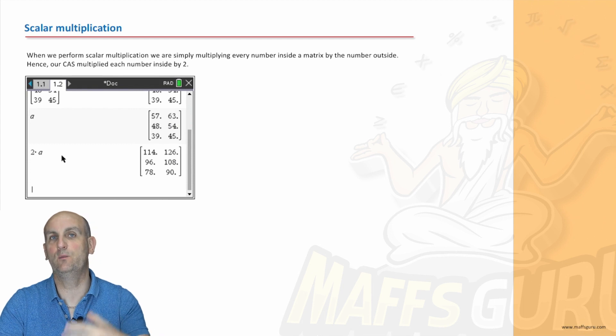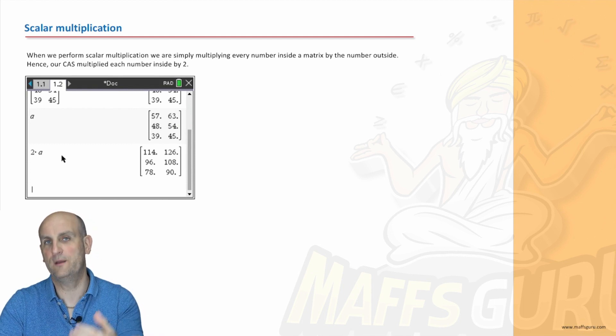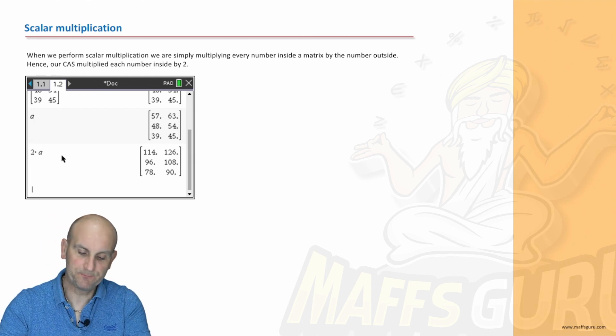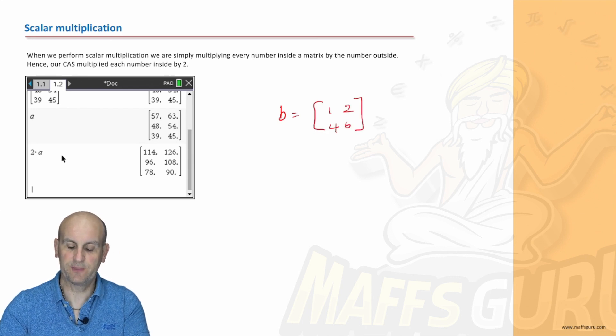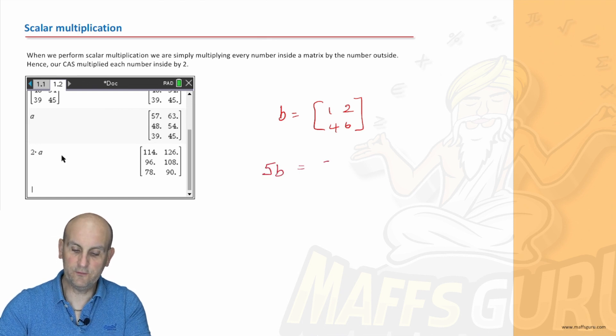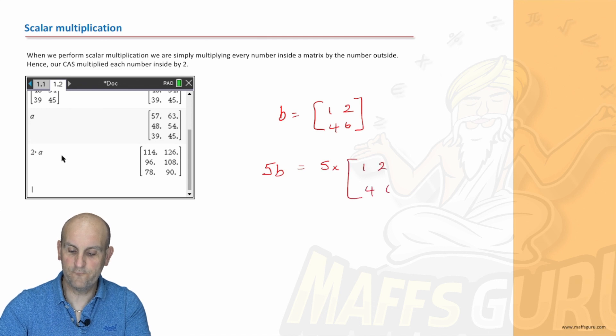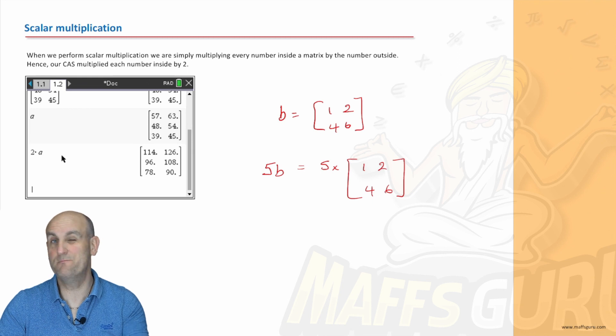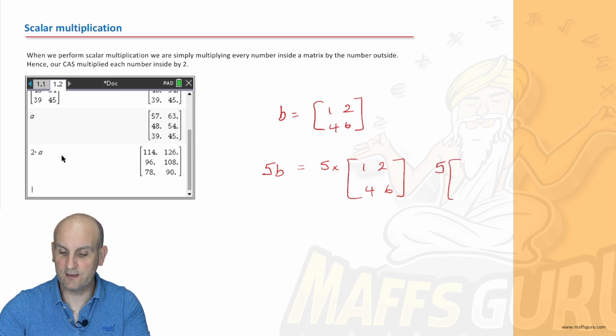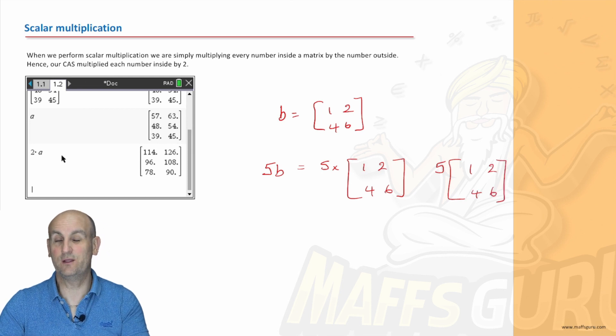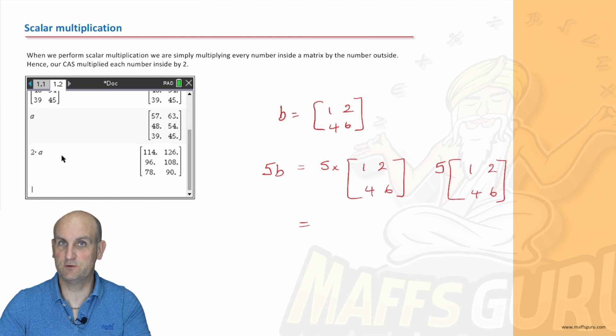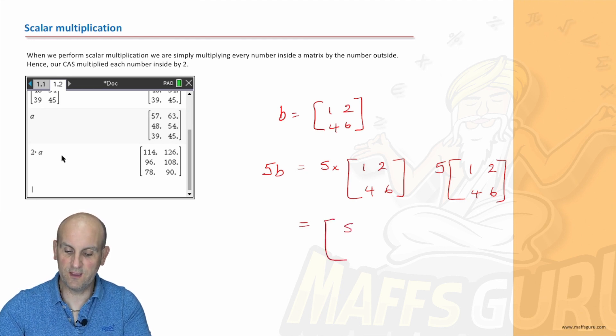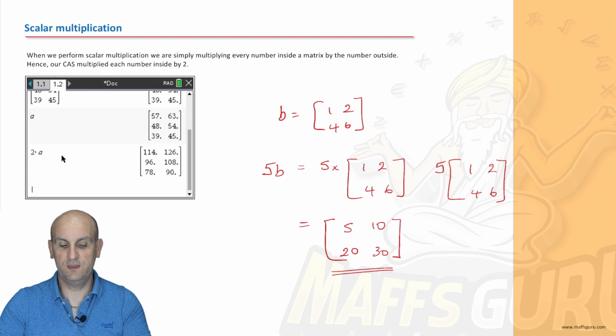So scalar multiplication is basically when we have every single element of a matrix multiplied by one single number. So if I had matrix B was equal to 1, 2, 4 and 6, and I wanted to do 5B then what I'm going to do is this: 5 times 1, 2, 4 and 6. And if I was going to do it by hand that's how I'd write it out. Now in that situation what I remember I've got to do is multiply each of the values inside by 5. So 1 times 5 is 5, 2 times 5 is 10, 4 times 5 is 20 and 6 times 5 is 30.